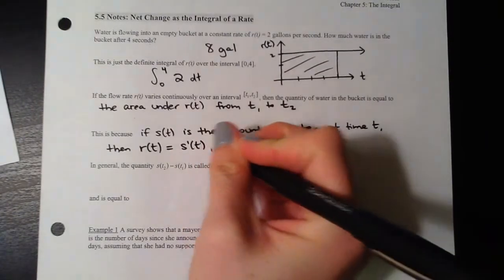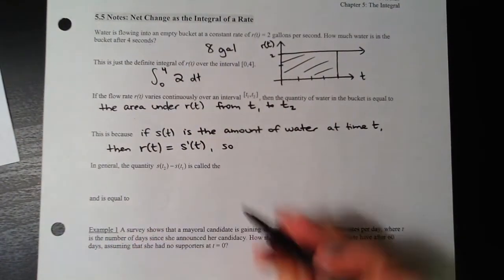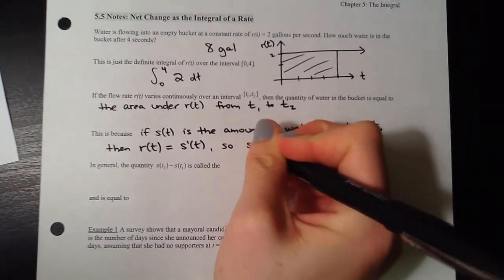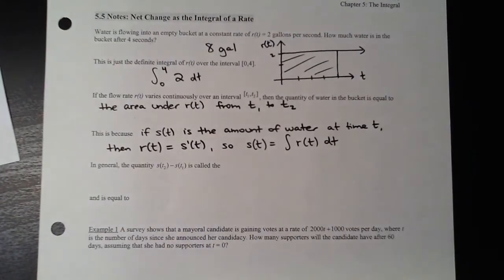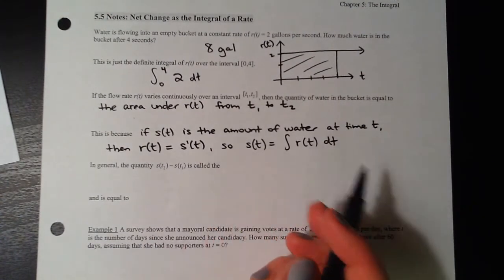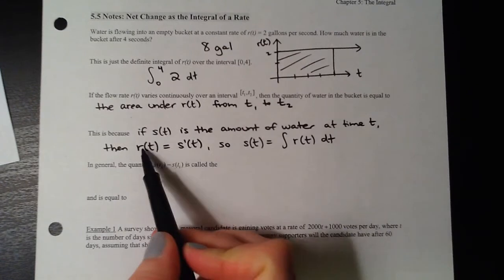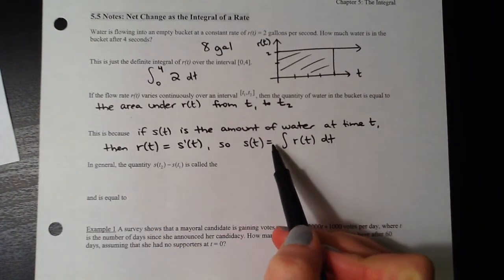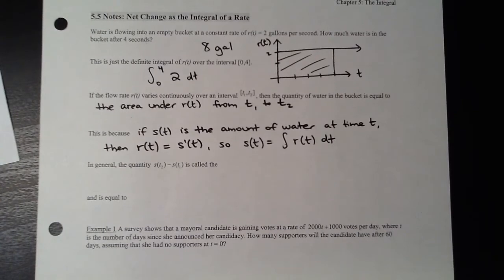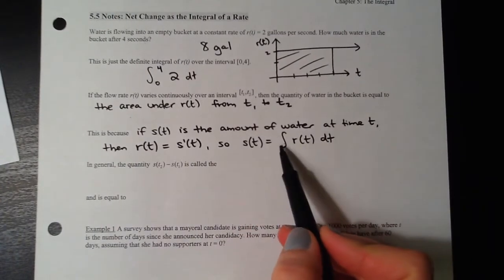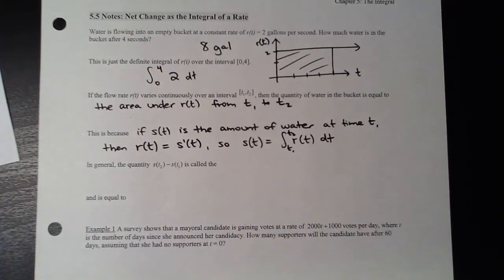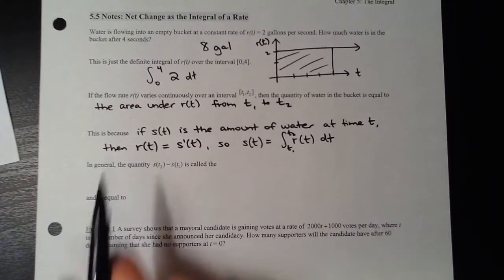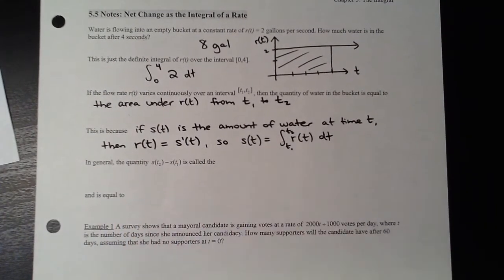If we take the antiderivative and throw in t1 to t2 as a definite integral, the area under r(t) from t1 to t2 gives us the total amount. The quantity s(t2) minus s(t1) is the amount at t2 minus the amount at t1 — this is called the net change in s(t). For the water example, the net change is just the 8 gallons accumulated in an empty bucket.